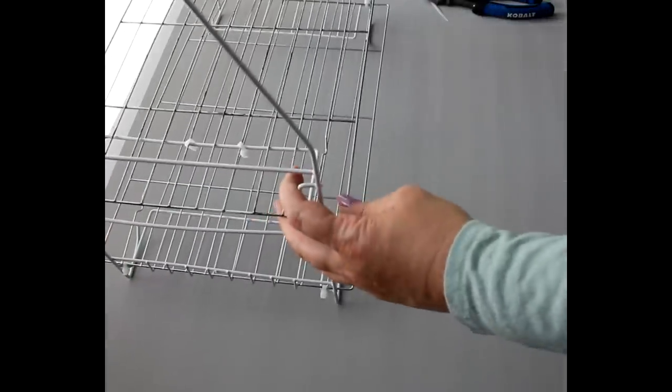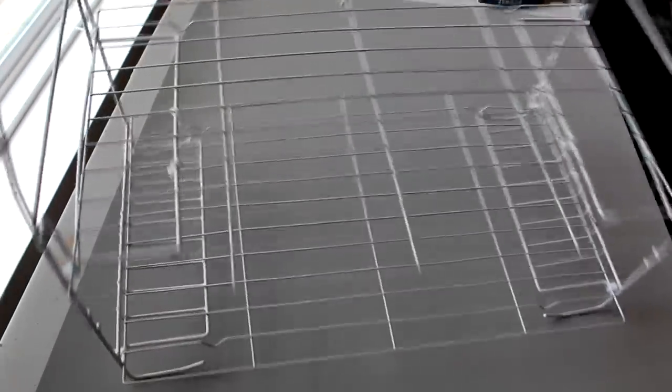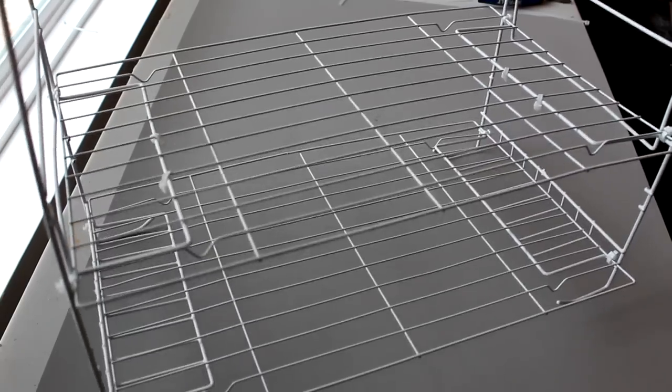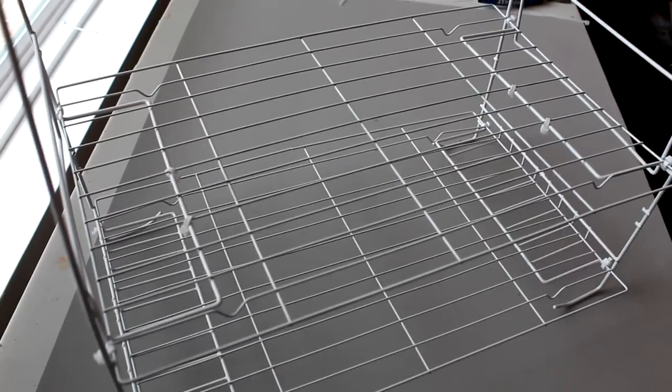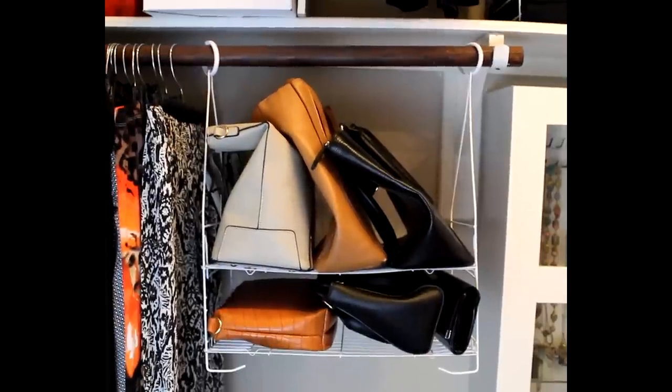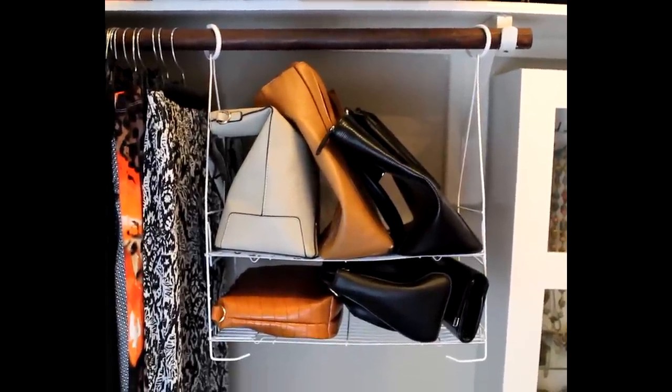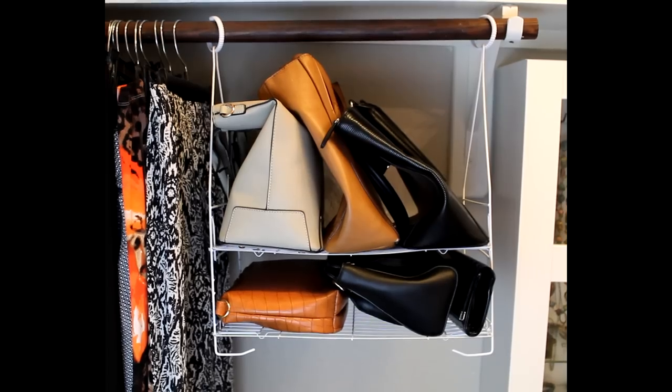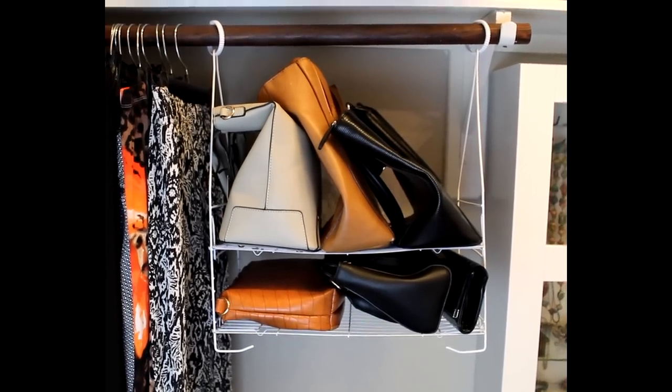However, the silver on the racks was bugging me a little bit, so I did decide to paint those with some white spray paint to give a more finished and cohesive look. But otherwise, it's ready to hang from a clothes rack with either zip ties or shower curtain rings. And then here you can see the finished project holding some handbags. And you can see how that top shelf can accommodate larger bags, while the bottom shelf can hold smaller ones.